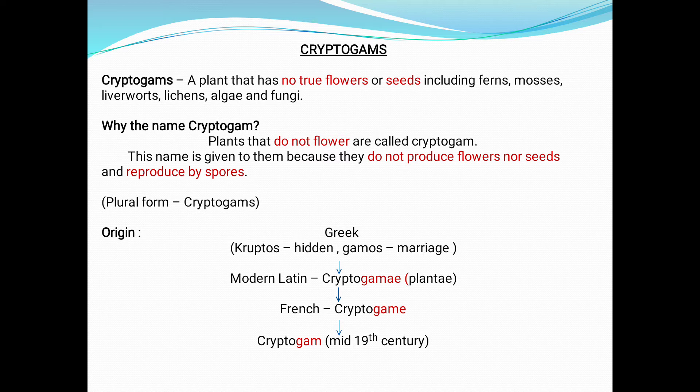Why the name cryptogams? The name is given to them because they do not produce flowers nor seeds, and they reproduce only by the mode of spore formation. Hence, the name given as cryptogams — the plural form of cryptogram is cryptogams.